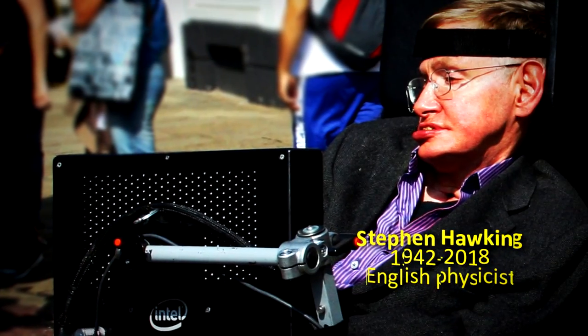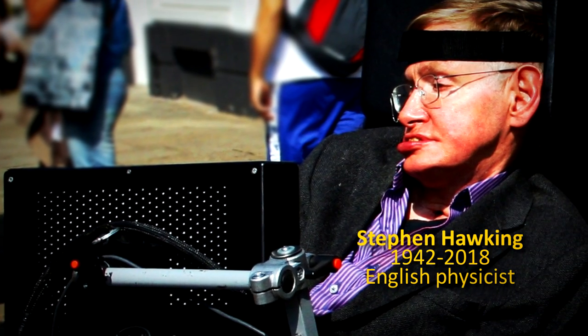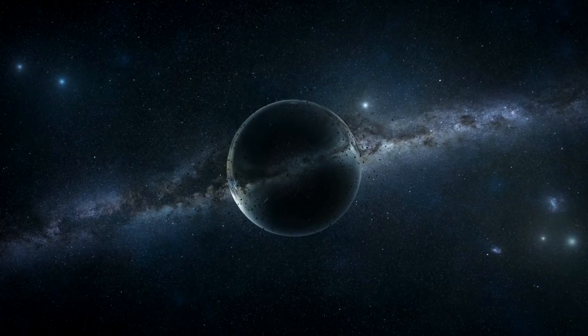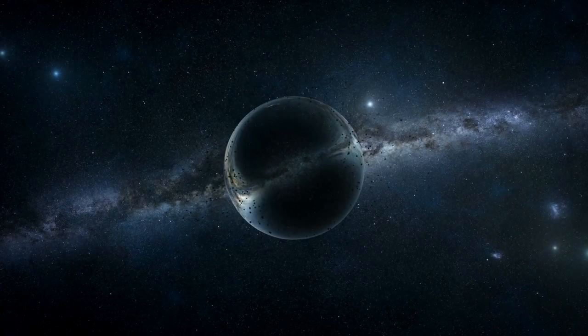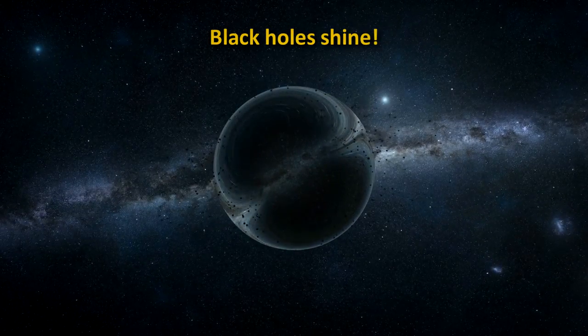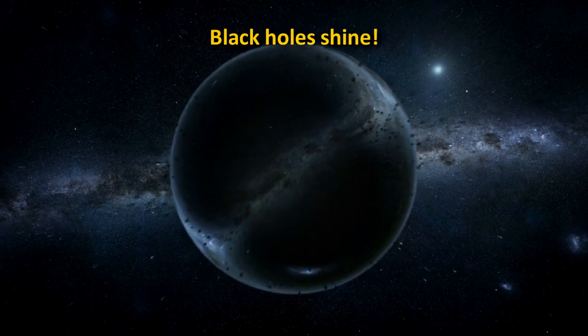But in 1974, Stephen Hawking theorized that a black hole may not be so black after all. His calculations showed that when you apply the laws of quantum mechanics to the classical physics that had defined our understanding of black holes, you find that they shine. They emit radiation. They give off photons.